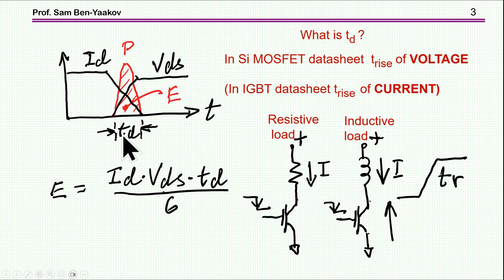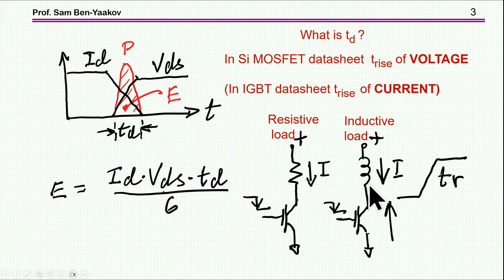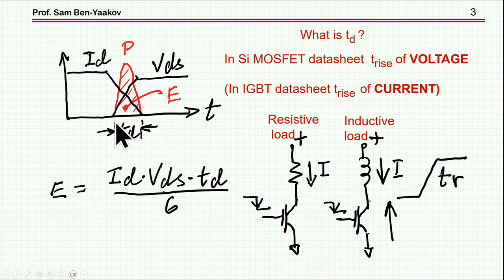The question is, what is this duration? The information given in the data sheet for a MOSFET is usually the rise time of the voltage. It is sometimes given for the inductive load that we are talking about, and sometimes for a resistive load, which is not relevant to our case. So in the case of this inductive load, the traditional approach would be to take this time and compute the energy lost in the process of turn-off.